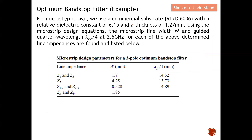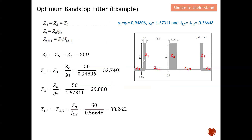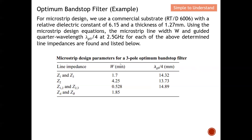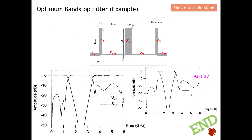For the microstrip implementation, we use a Roger board with a relative dielectric constant of 6.15 and substrate thickness of 1.27 mm. Using the filter design equations, we calculate the width and length of each microstrip line — all lengths are quarter-wavelength with respect to the midpoint frequency of the band stop filter. With these values, the optimum band stop filter can be realized. There are some rounding of numbers so that we can have a better response.